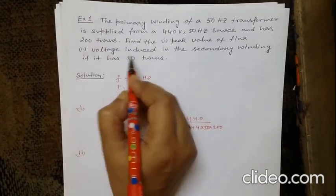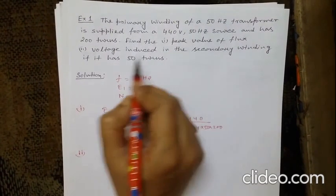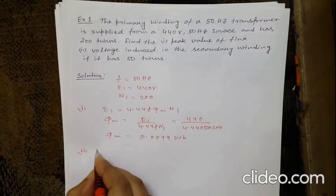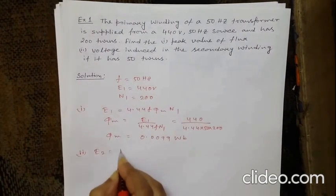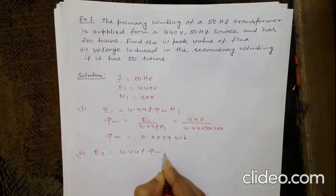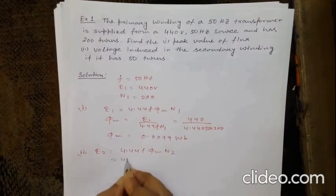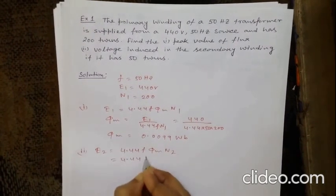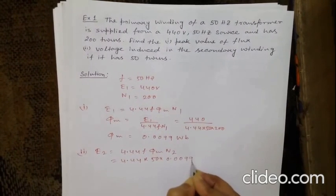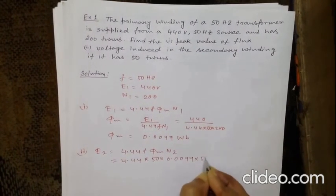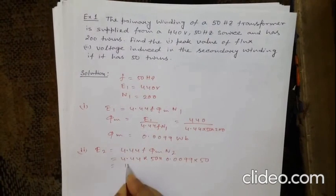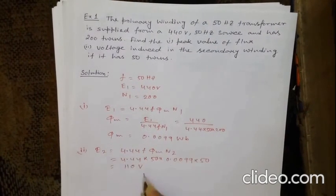For part 2, the voltage induced in the secondary winding with 50 turns: E2 = 4.44·f·Φm·N2 = 4.44 × 50 × 0.0099 × 50. After computing this value, we get the secondary induced voltage.